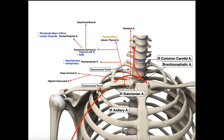Following the subclavian artery, it doesn't last very long — it eventually passes over the margin of the first rib. It partly goes under the clavicle. When the subclavian artery passes over the margin of the first rib, it changes names to the axillary artery, and that's the same on both sides. This span is really all the subclavian artery is — it's pretty short. The axillary artery is a little bit longer and we'll cover that in the next video.